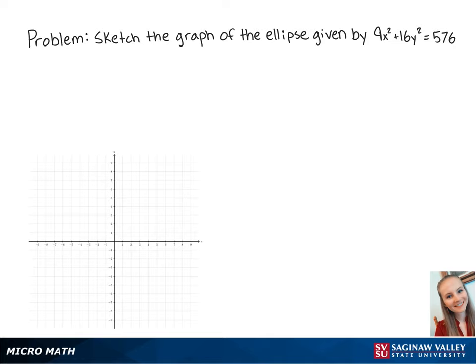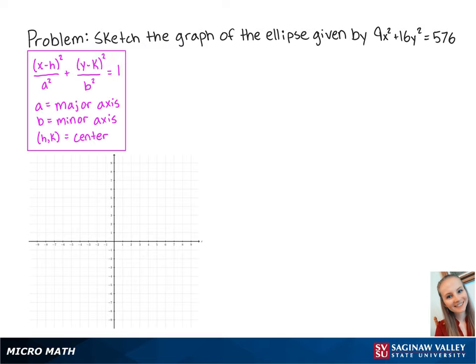For this problem, we're going to sketch the graph of the ellipse given by 9x squared plus 16y squared equals 576. Here we have the standard equation of an ellipse. The first thing we need to do is to get our equation into standard form.